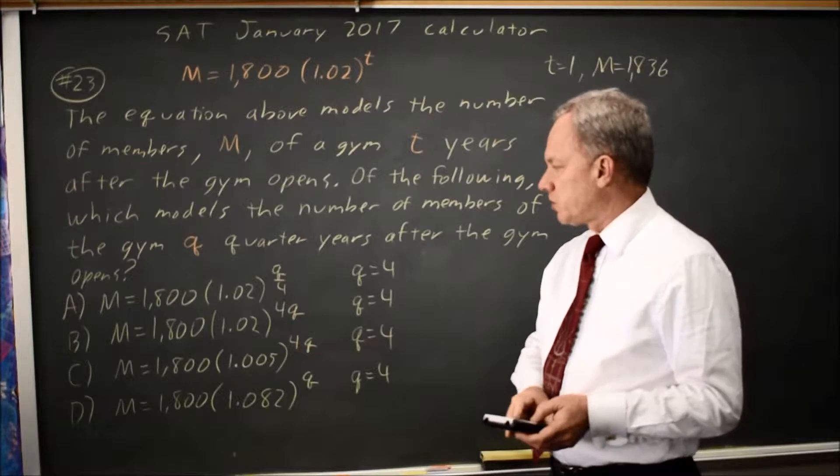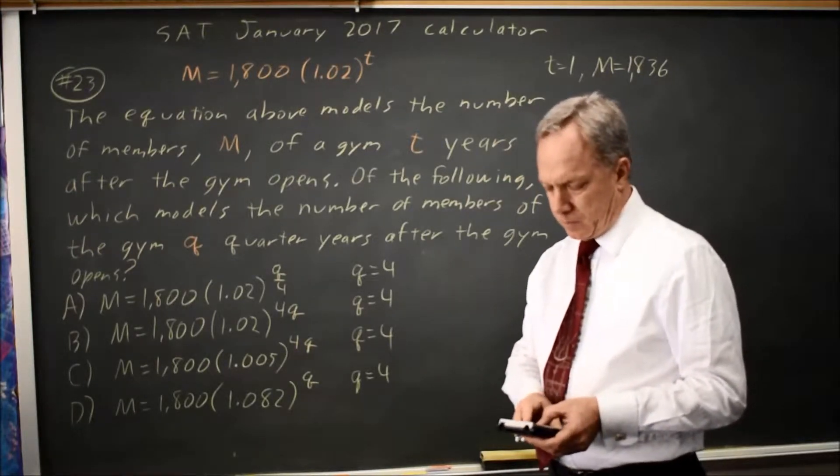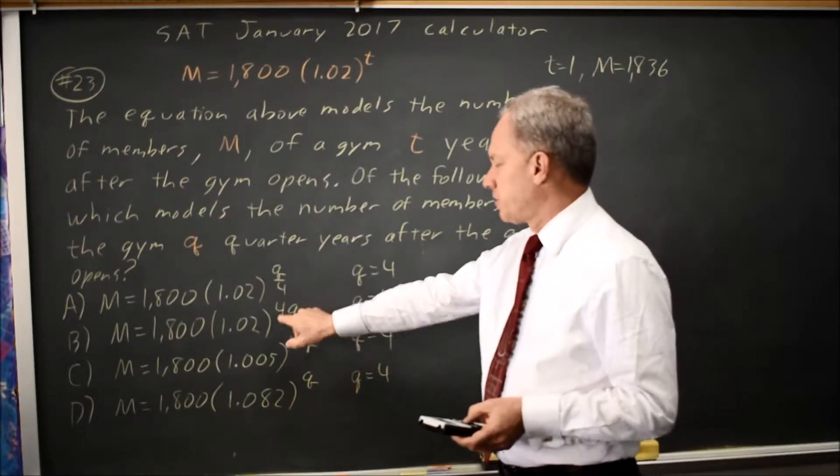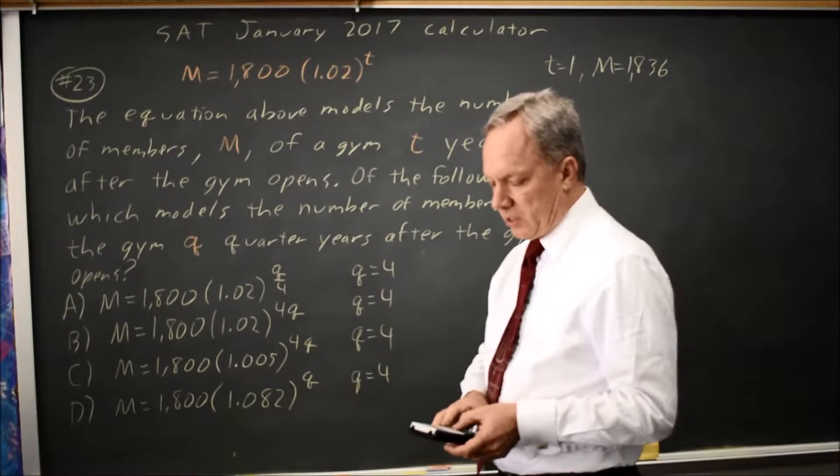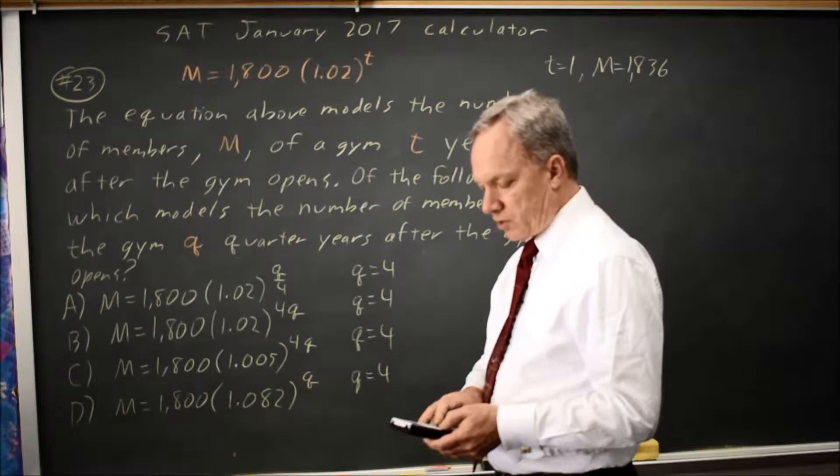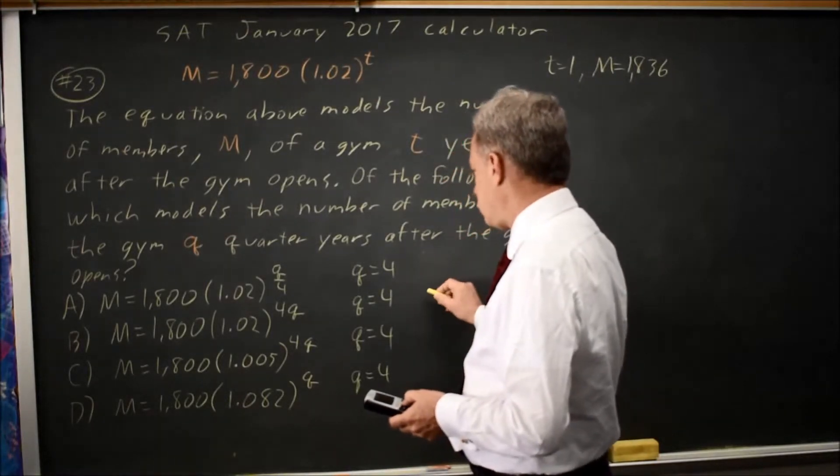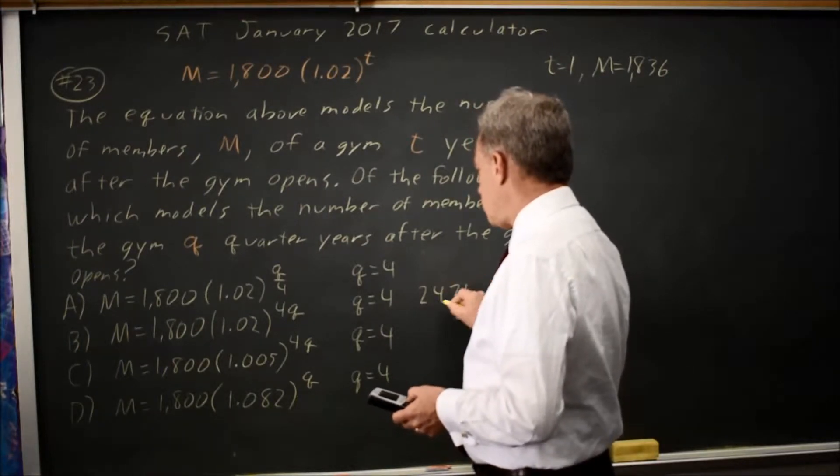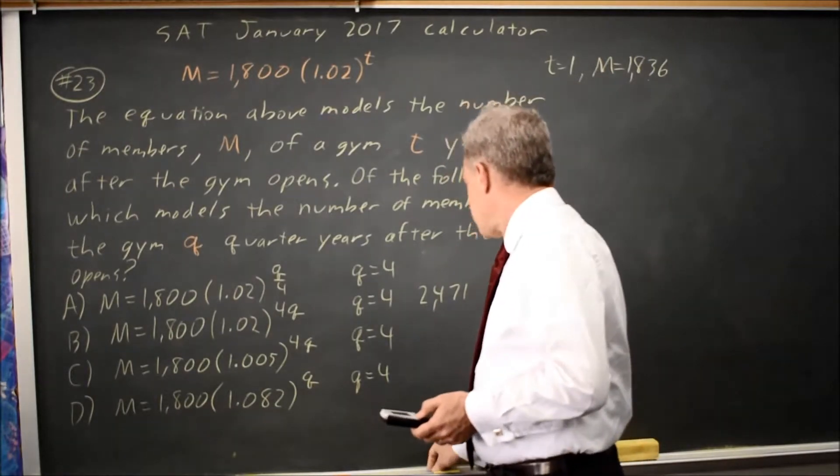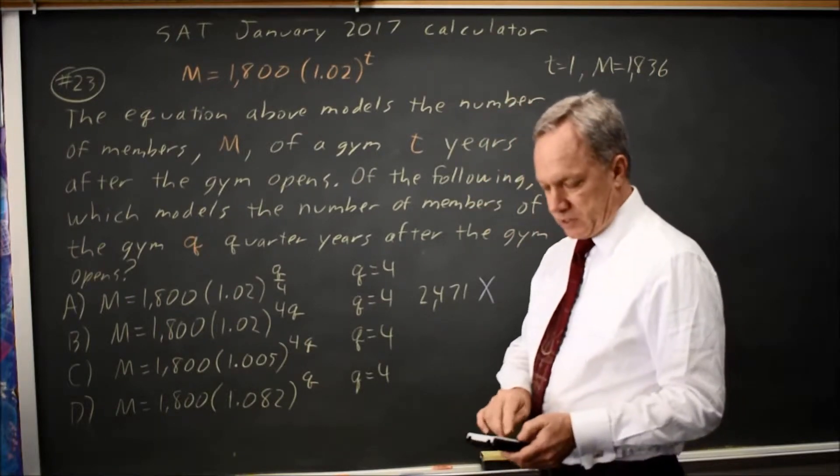If I put choice B into my calculator, making sure that my exponent is in parentheses if I have the classic display, and check q equals 4, I get 2471 members, which does not match 1836, so that is wrong.